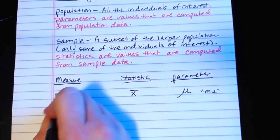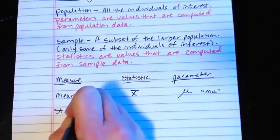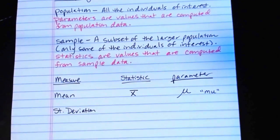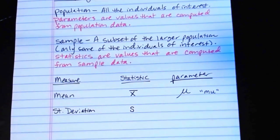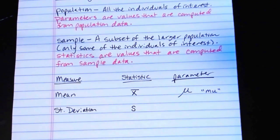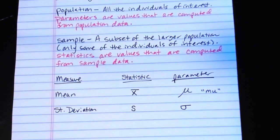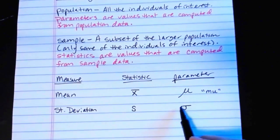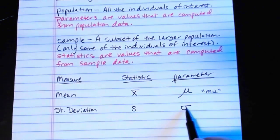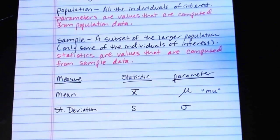Now, if we have standard deviation, that's the measure of interest, the standard deviation of a sample gets the lowercase English letter S. The standard deviation of the population gets the lowercase Greek letter sigma. That looks sort of like a lowercase r, but with a really flat top and kind of a puffy backbone there.